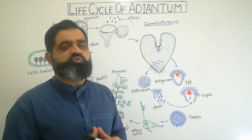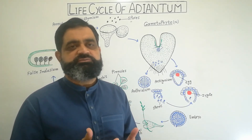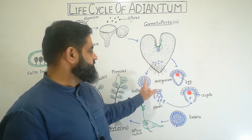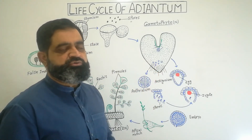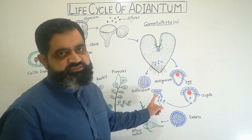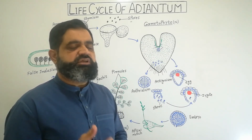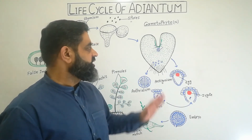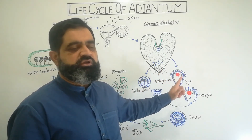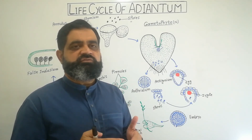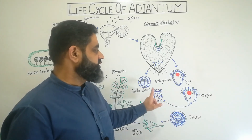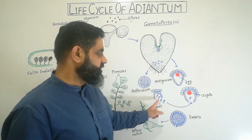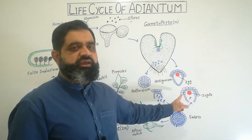Since the plant body is haploid, it produces gametes by mitosis. In the same way, antheridia near the rhizoids divide by mitosis and produce many sperms known as antherozoids. These antherozoids are also produced by mitosis, are haploid, are spirally coiled, and have many cilia so they can easily swim in water. When both antherozoids and egg become mature, water from rain or dew drops provides a surface for fertilization.